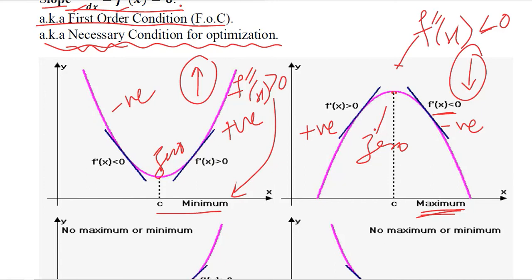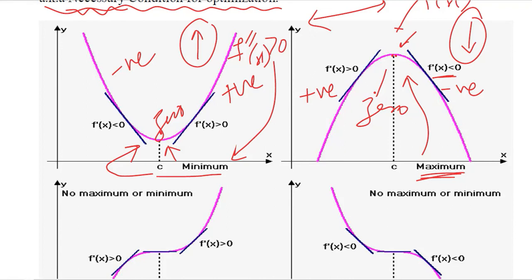The second order condition helps us confirm whether we are at a minimum or a maximum. The first order derivative can only tell us the slope is zero, but we do not know exactly whether it is a minimum or a maximum. Being misled to a minimum when looking for a maximum can be drastic — we could maximize an unfavorable variable or minimize a favorable one. Rationality requires that one maximizes benefits and minimizes costs.